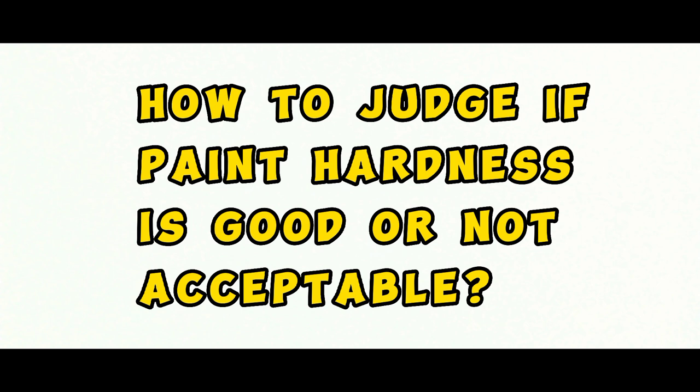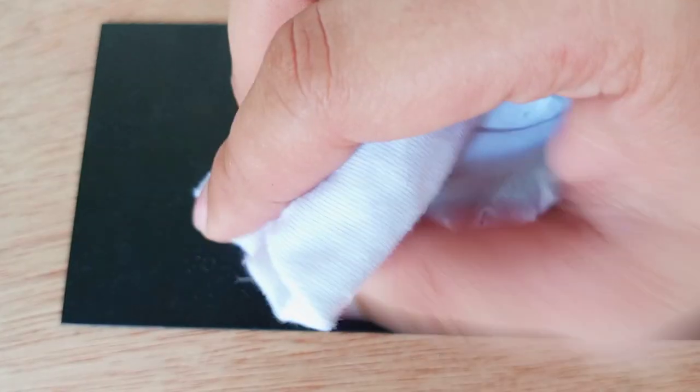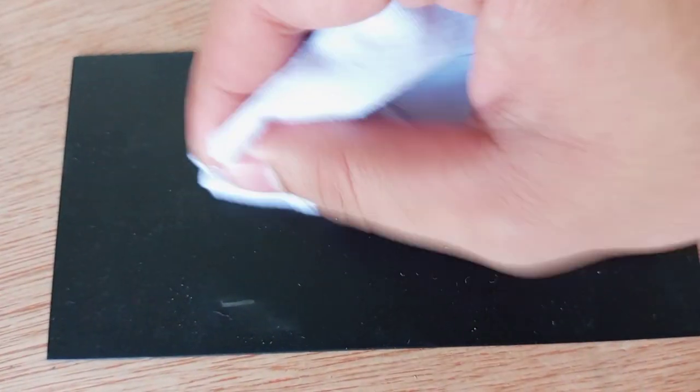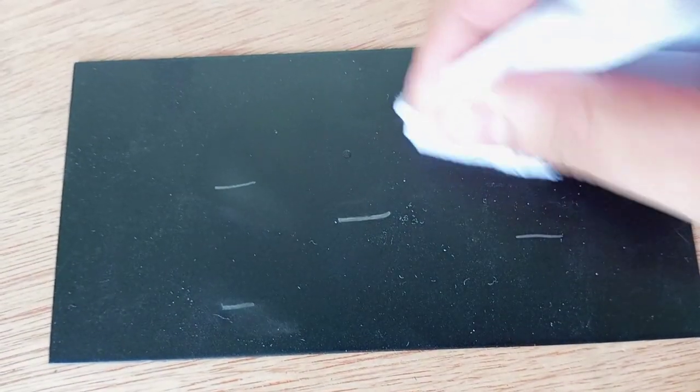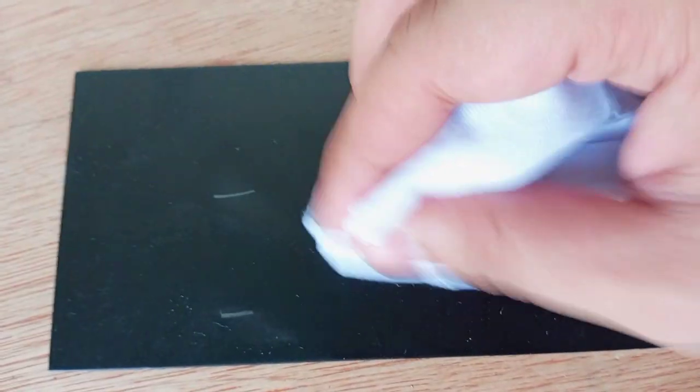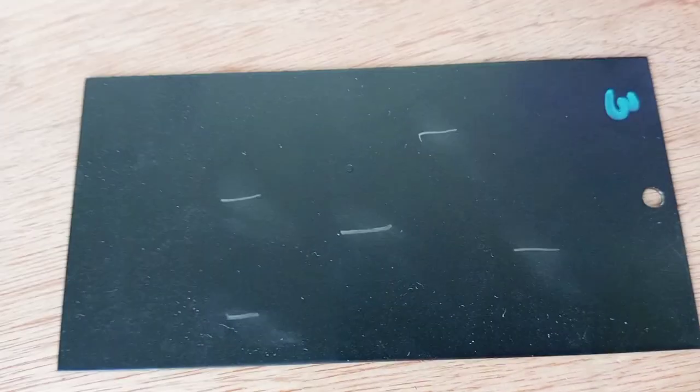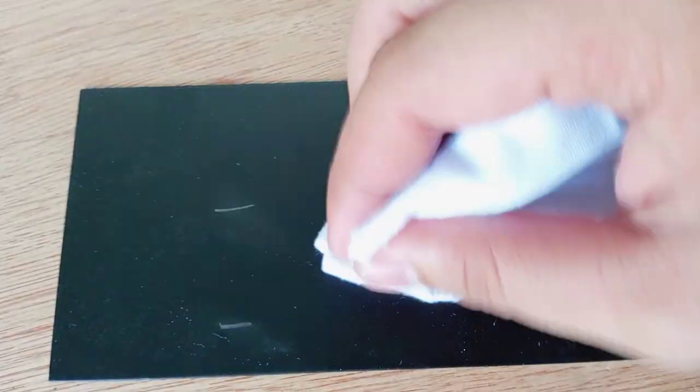How to judge if paint hardness is good or not acceptable? After the paint hardness test, clean the black lead with a piece of soft cloth to inspect the coating. When 5 lines show no tears or flaws, the coating shall be regarded as scratch resistant to the pencil hardness tested.